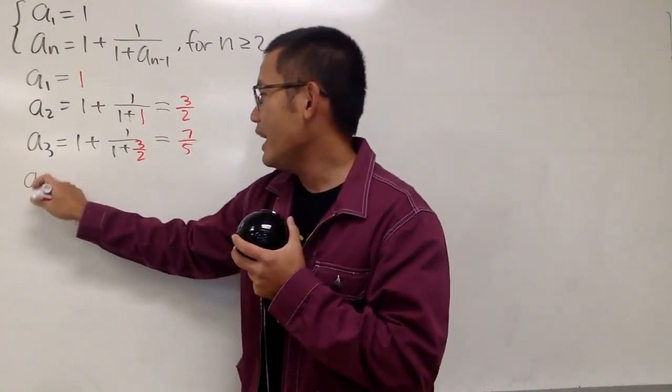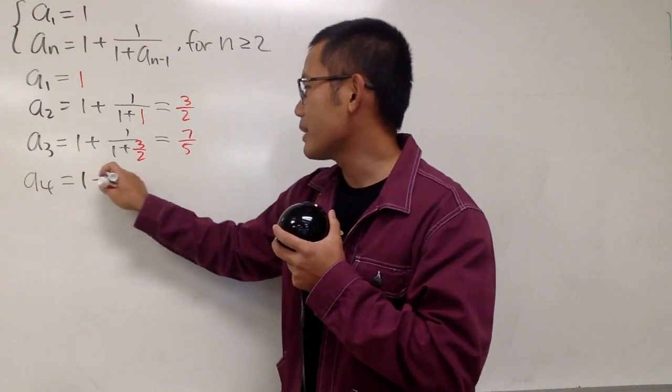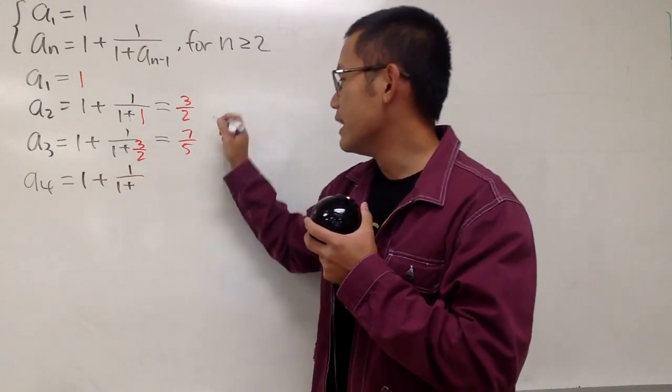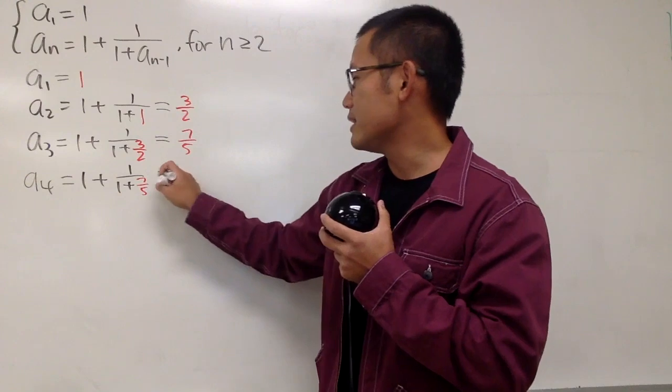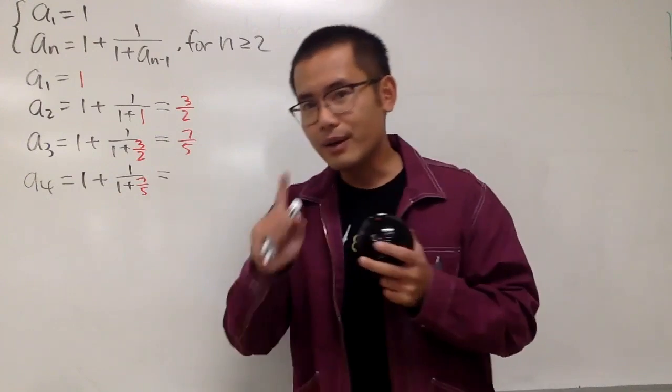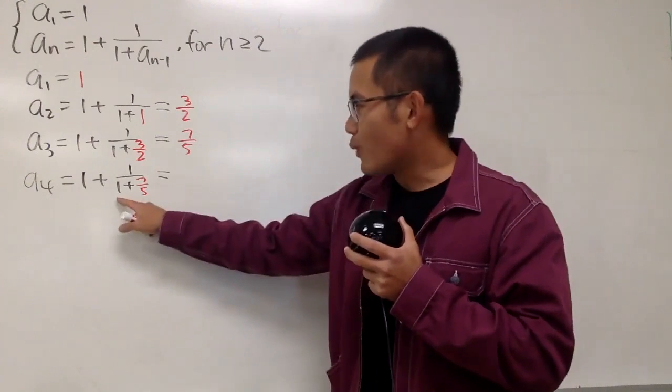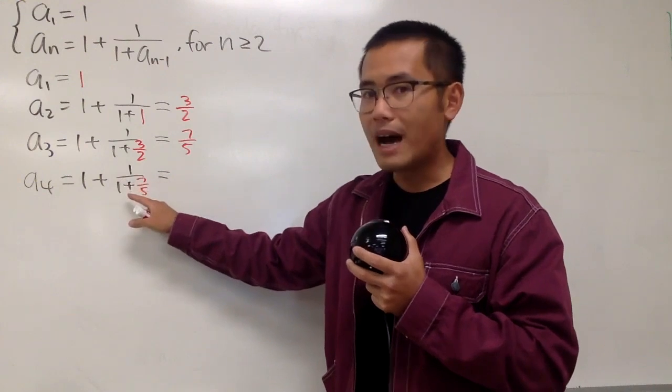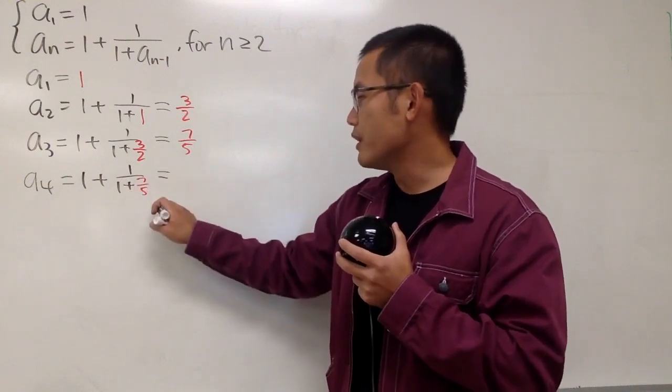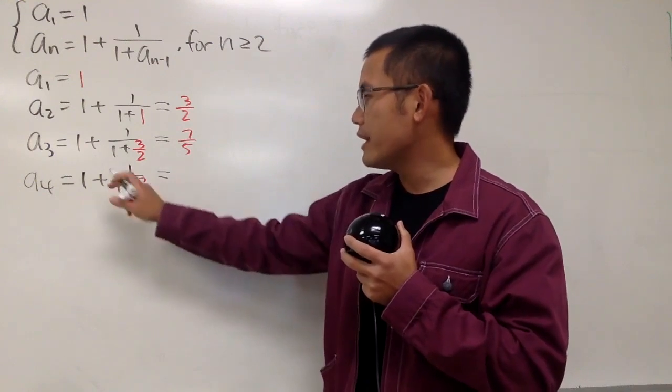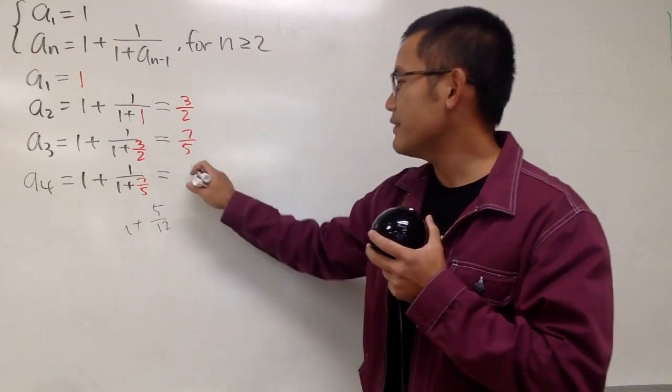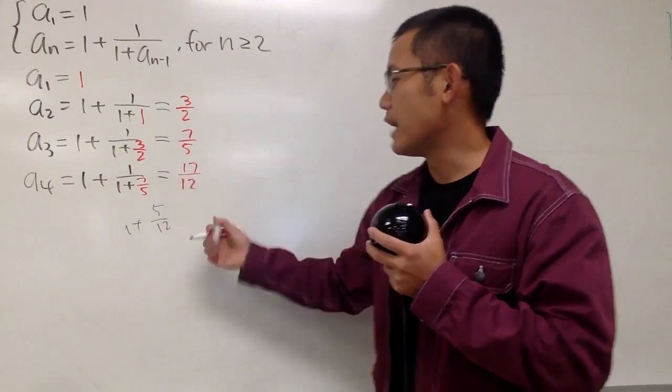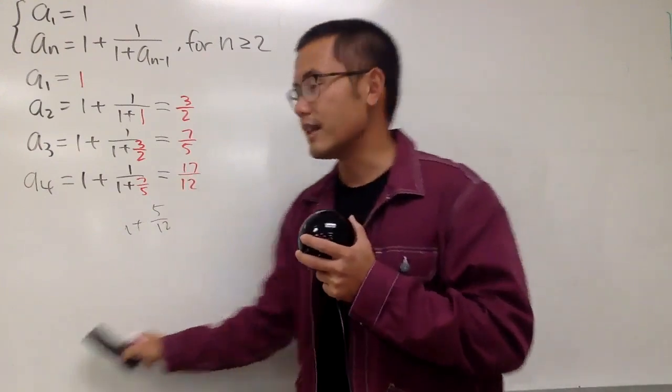And let's do one more. a₄ is equal to 1 plus 1 over 1 plus 7 over 5, right here. And let's see if we can do this in our head or not. Okay. Plus 1 is going to be 12 over 5, do the reciprocal, it's going to be 5 over 12, and then we add 1 to that, it's going to be 17 over 12, like this, right? So that's the idea.